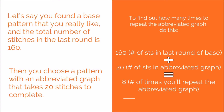Let's say you found a base pattern that you really like and the total number of stitches in the last round is 160. Then you choose a pattern with an abbreviated graph that takes 20 stitches to complete. To find out how many times to repeat the abbreviated graph, divide the number of stitches in the last round of the base — which in this case is 160 — by the number of stitches in the abbreviated graph, which in this case is 20. That will give you the number of times you should repeat the abbreviated graph, which in this case is 8. So in this example, in order for this abbreviated graph to fit the base you chose, you should repeat the abbreviated graph 8 times.